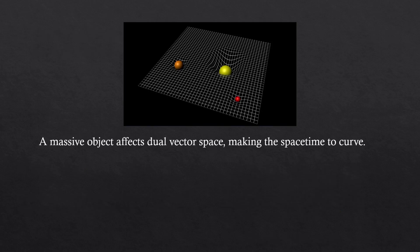So, a massive object affects dual vector space, making the space-time to curve. Physical quantities around the curvature are affected, such as velocity. I hope you got the concept of the dual vectors.